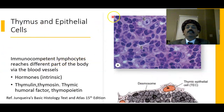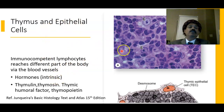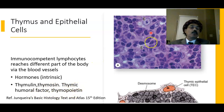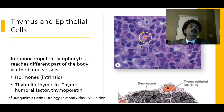Immunocompetent lymphocytes reach different parts of the body via the blood vessels. Hormones are secreted from the epithelial reticular cells, including thymosin, thymulin, thymic humoral factor, and thymopoietin. The production of T lymphocytes is also controlled by external hormones such as adrenocorticotropic hormone, thymic hormones, and somatostatin.